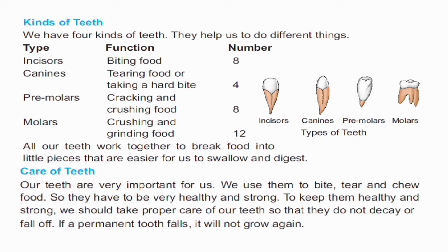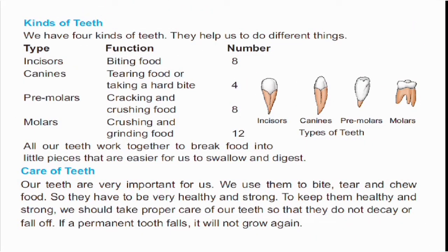All our teeth work together to break food into little pieces that are easier for us to swallow and digest. Our teeth are very important for us — we use them to bite, tear, and chew food, so they have to be very healthy and strong. We should take proper care of our teeth so that they do not decay or fall off. If a permanent tooth falls, it will not grow again.